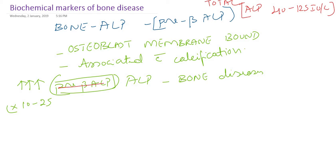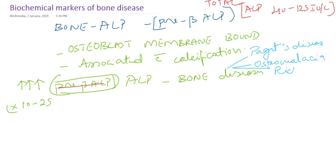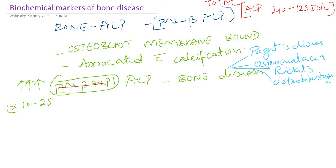A high amount - maybe more than 10 times or 25 times the normal - of alkaline phosphatase elevation in the blood is seen in bone disease. This bone disease could be Paget's disease of the bone, osteomalacia - which is in adults; in children it is called rickets due to vitamin D deficiency - osteosarcoma, osteoblastoma, or metastatic bone disease.